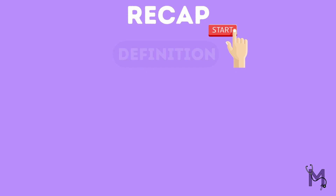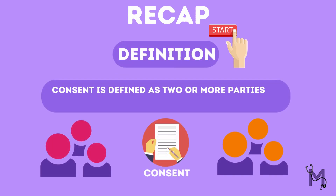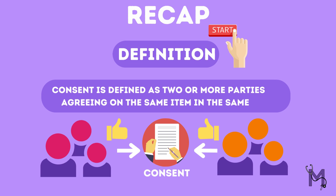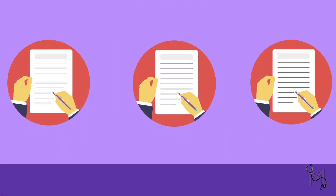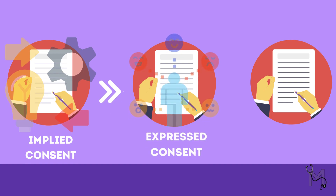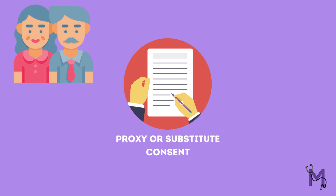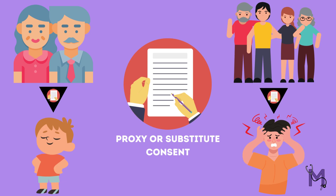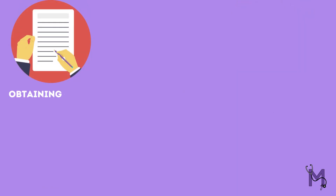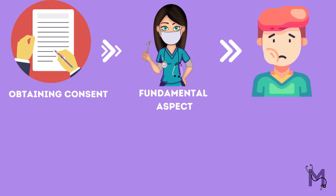To quickly recap: consent is when two or more parties agree to the same thing in the same sense. Consent can be divided into three types — implied, expressed, and informed. All of these could take the form of substitute consent in cases where a family member or close relative of the patient gives consent on their behalf.